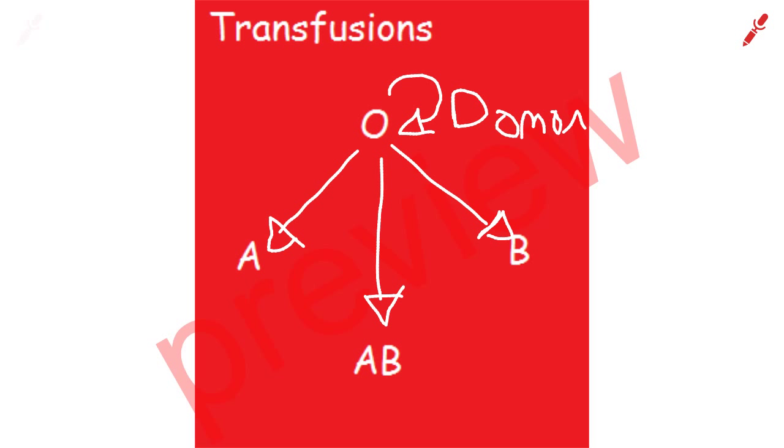AB has terminal sugar A and B, so that is not foreign to the body. He can receive blood from O, the universal donor, B, A and AB. He is a universal recipient.